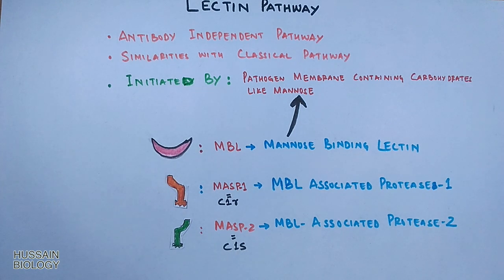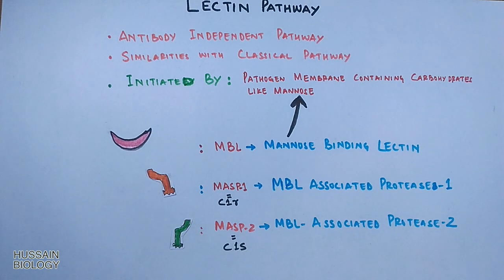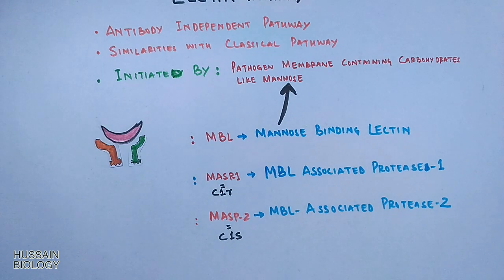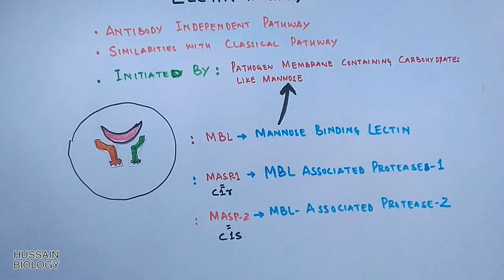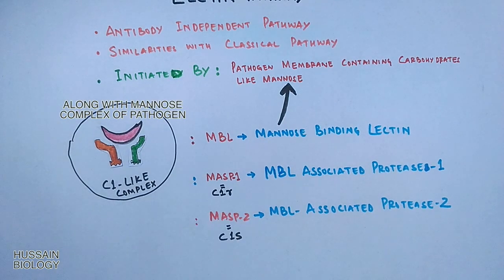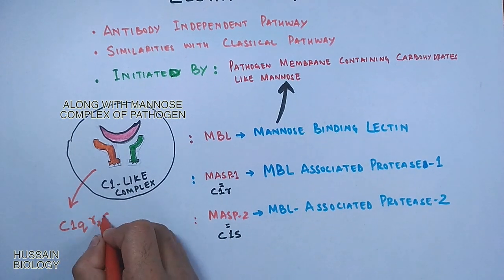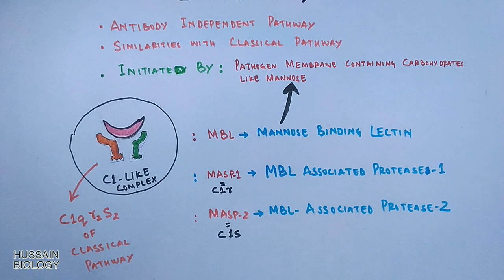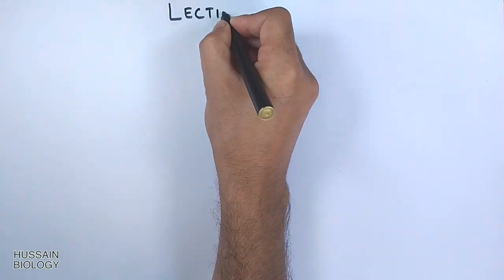All three components join together and form a complex on the pathogen membrane during the lectin pathway. This complex is like the C1 complex of the classical pathway (C1qr2s2) and has proteolytic activity on complement proteins. Now let's discuss this pathway in detail.